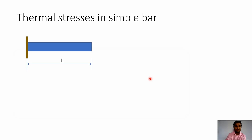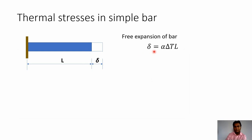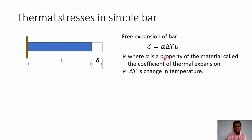When we have a bar which is free to expand or contract — that is, when it is not restrained or fixed at its both ends — free expansion takes place when it is subjected to a rise in temperature. This free expansion of the bar is given by delta = alpha × delta T × L, where alpha is the coefficient of thermal expansion and delta T is the change in temperature. If there is expansion, it is an increase in temperature; if there is contraction, there is a decrease in temperature.